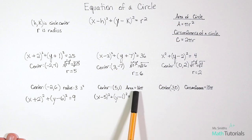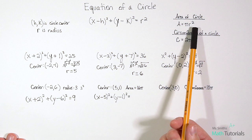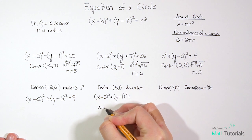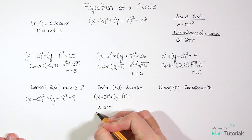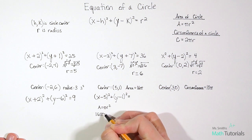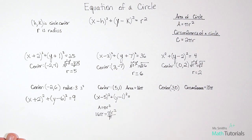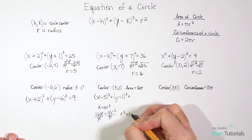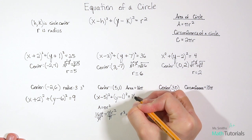We use the area formula: A = πr². We know the area is 16π, so 16π = πr². Dividing both sides by π, we get r² = 16. And since the formula needs r², we can fill in our equation directly with r² = 16.